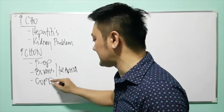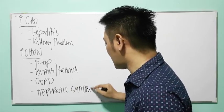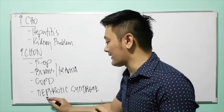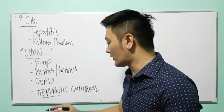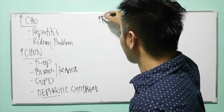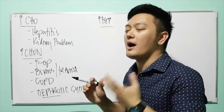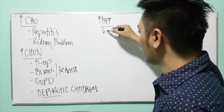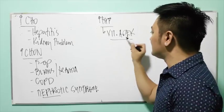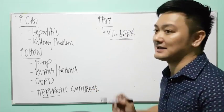Additionally, patients with COPD and patients with nephrotic syndrome need high-protein diet. Remember: nephrotic syndrome requires high-protein intake. For high-fat diet: vitamins A, D, E, and K are fat-soluble vitamins, so patients taking these vitamins need increased fat intake to allow absorption.